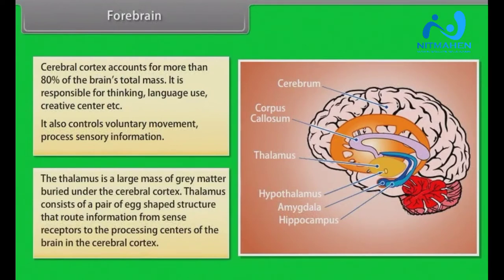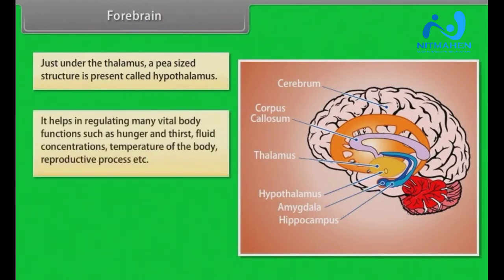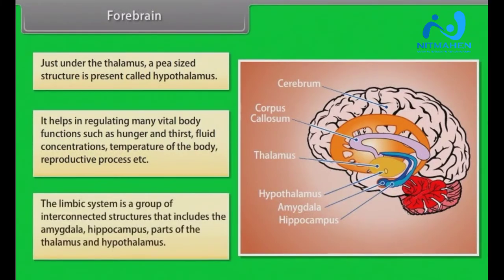The thalamus is a large mass of gray matter buried under the cerebral cortex. It consists of a pair of egg-shaped structures that route information from sense receptors to the processing centers in the cerebral cortex. Just under the thalamus, a pea-sized structure called the hypothalamus helps regulate vital body functions such as hunger, thirst, fluid concentrations, body temperature, and reproductive processes. The limbic system is a group of interconnected structures that includes the amygdala, hippocampus, and parts of the thalamus and hypothalamus.